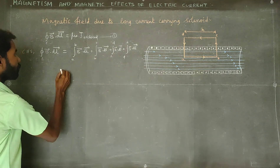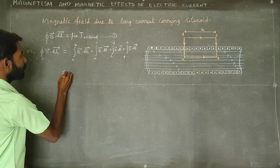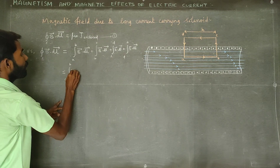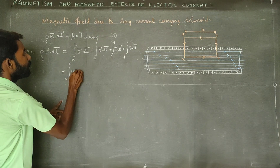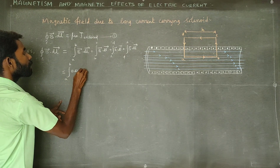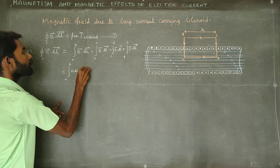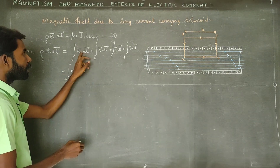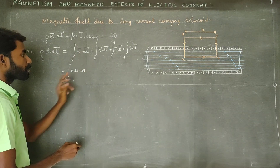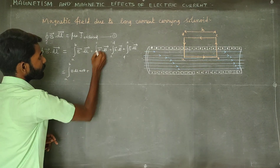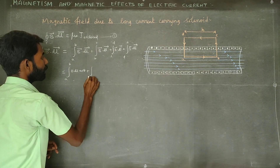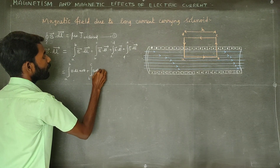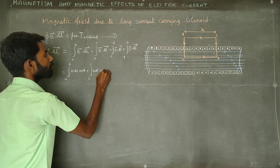Then we know the equation. From A to B, the integral of B dL cos theta. Now B-vector dot dL-vector is a dot product involving cos theta. Let's expand this: integral over AB of B dL cos theta, plus integral over BC of B dL cos theta, plus integral over CD of B dL cos theta, plus integral over DA of B dL cos theta.